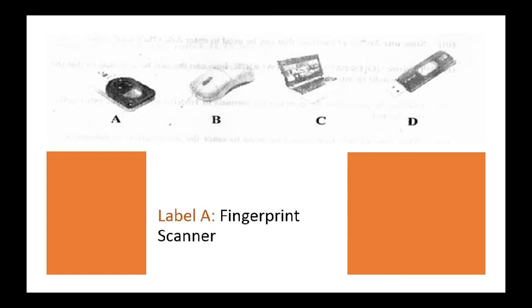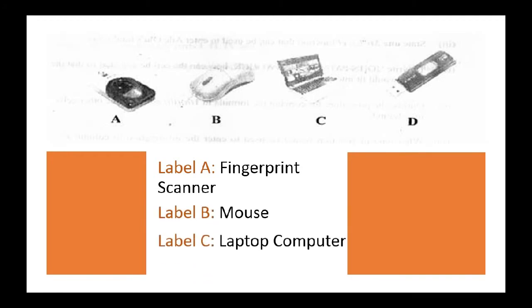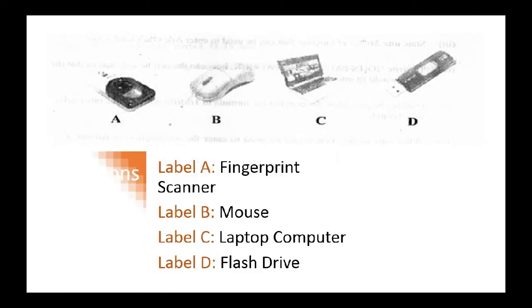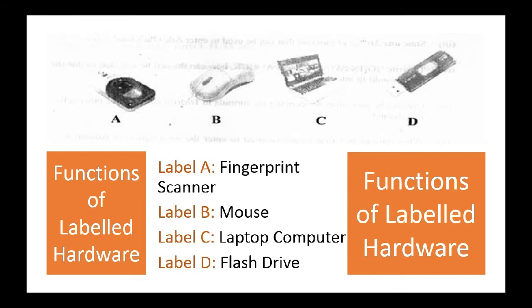Here is another diagram pulled from one of the past questions. If you don't have a good knowledge about computer hardware, you will have a challenge dealing with questions about this diagram. You are expected to name the labeled computer hardware. Label A is a fingerprint scanner, Label B is a mouse, Label C is a laptop computer, and Label D is a flash drive. The fingerprint scanner helps you to scan your fingerprints into the computer system — it is an input device. The mouse helps you to send control signals into your computer system — it is also an input device. The laptop helps you to process data into information and carries out computing functions. The flash drive is a storage device that helps you to store data and information, either for a short or long time.